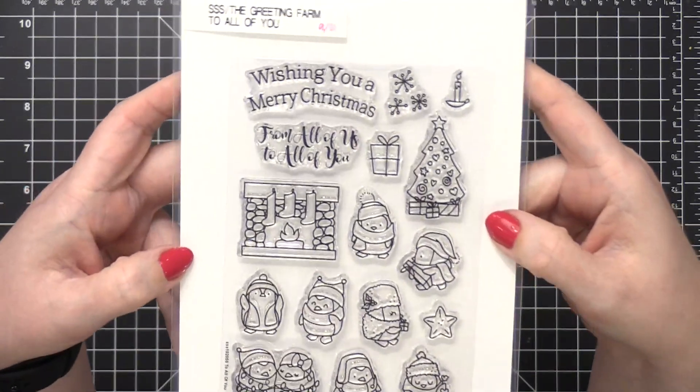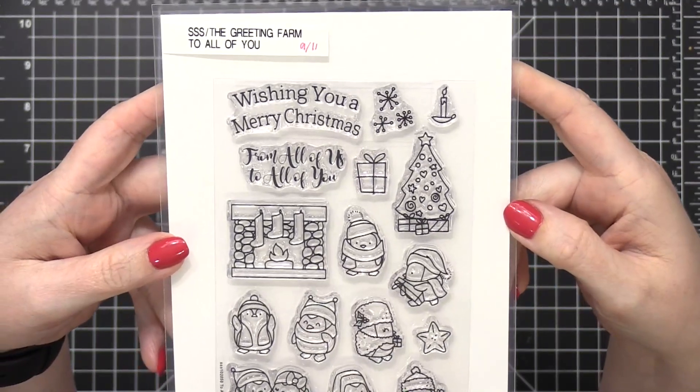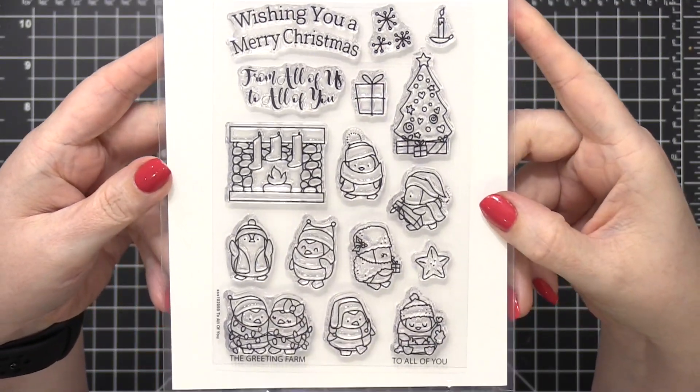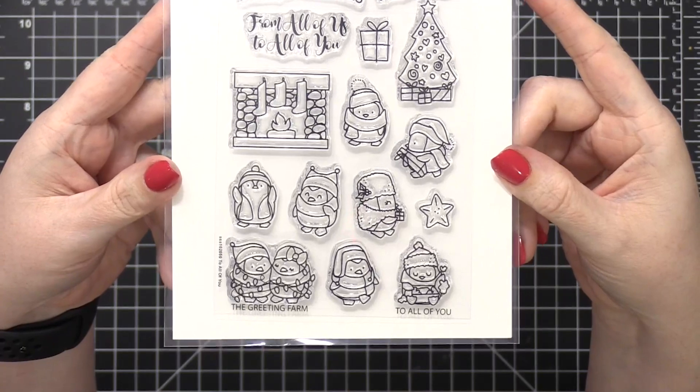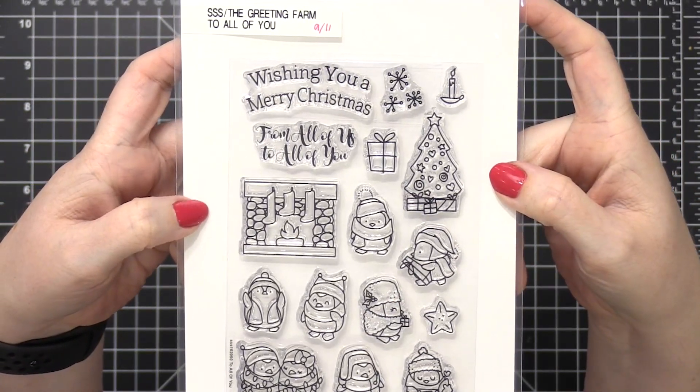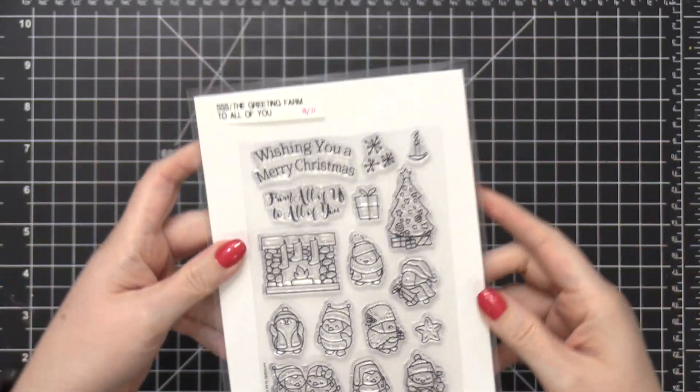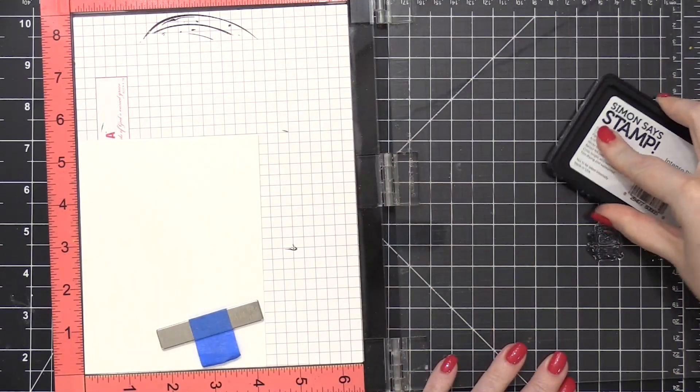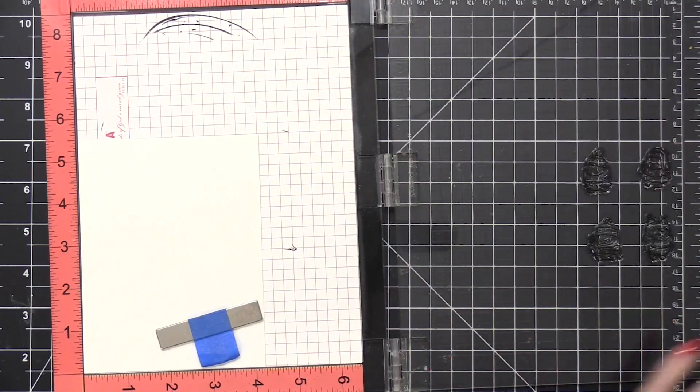Today I'm using the all new to all of you stamp set from The Greeting Farm. This is a collaboration stamp set for Stamptember and it has all these really cute penguins, a fireplace, a Christmas tree. You could build a scene with all of these images and it would be adorable. But today I'm going to be showing you a different way to use all these smaller images.